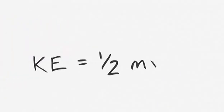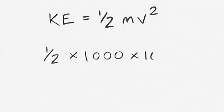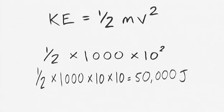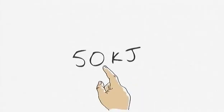The car's kinetic energy is given by half the mass times the speed in metres per second squared. So that's half times a thousand times ten times ten. So that's 50,000 joules or 50 kilojoules. It all makes so much sense.